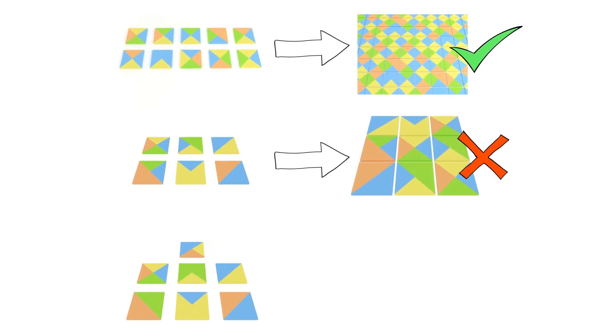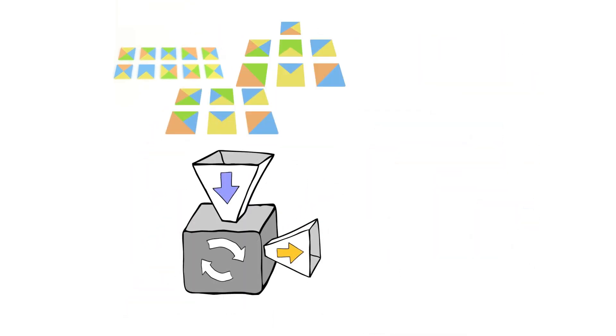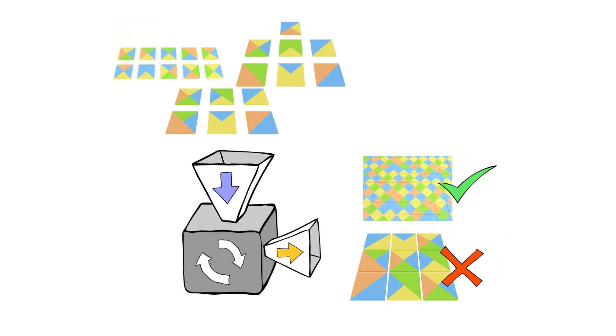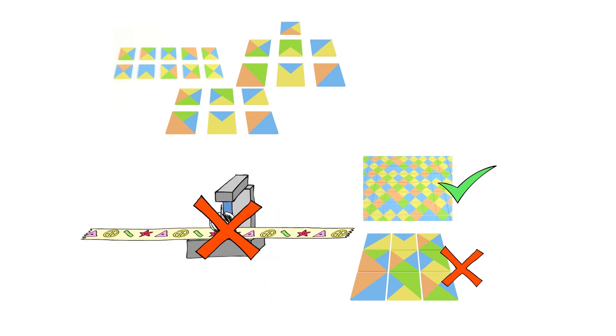By now, you can probably guess, the answer is, there's no way to know. There can be no method that can take any given set and decide whether or not it tiles the plane. And since there's no method, there can also be no computer program to solve it.